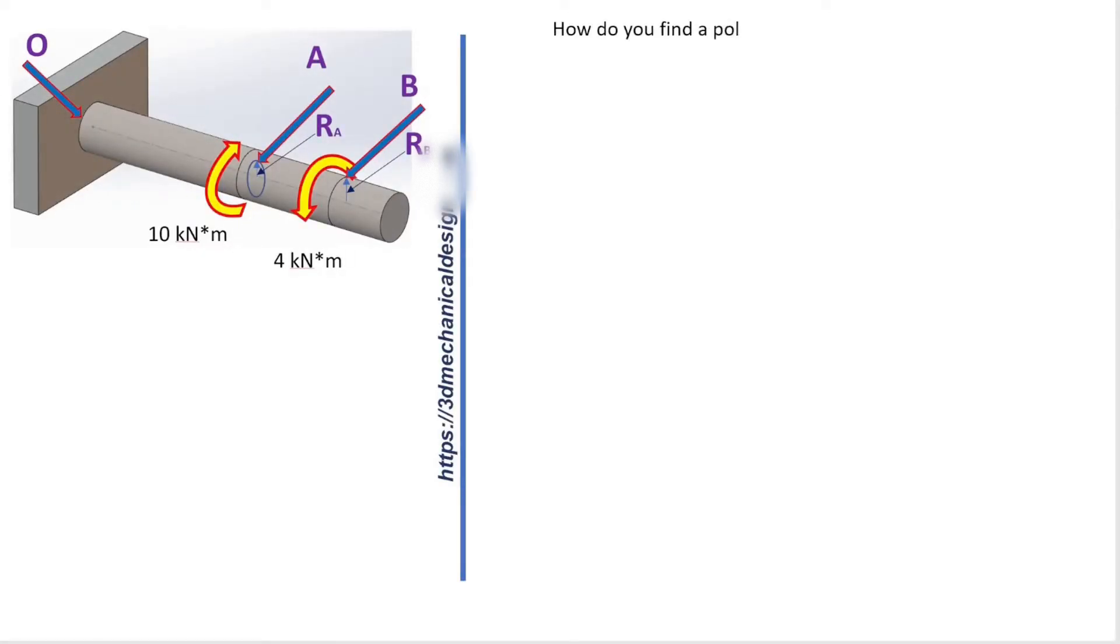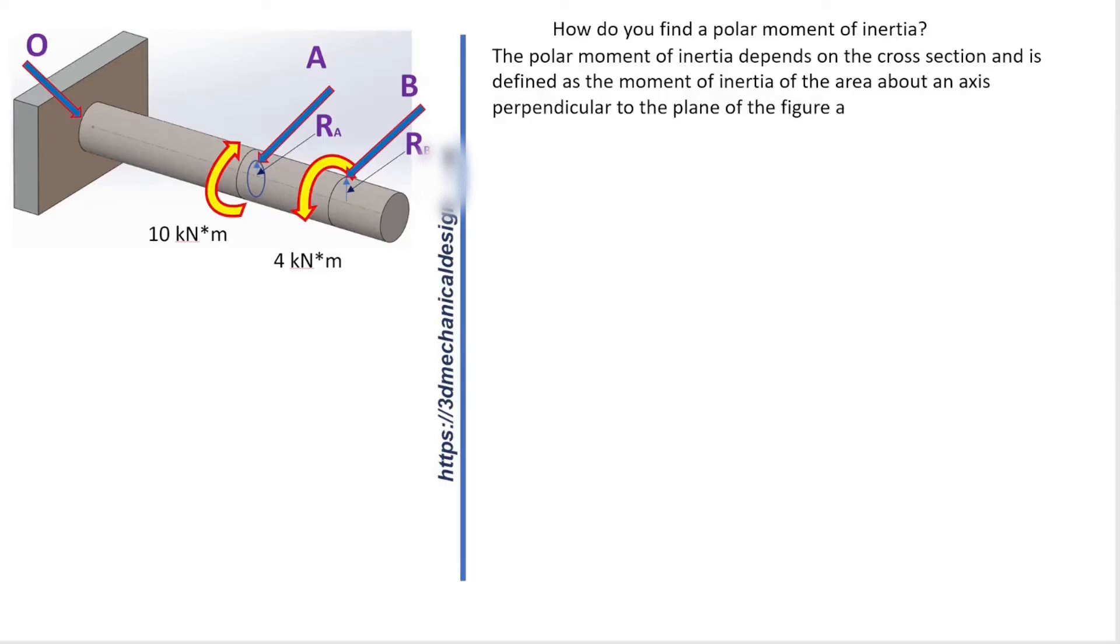How do you find a polar moment of inertia? The polar moment of inertia depends on the cross section and is defined as the moment of inertia of the area about an axis perpendicular to the plane of the figure and passing through the center of gravity of the area. See below polar moment of inertia for various sections.